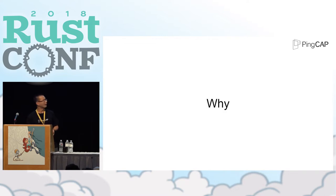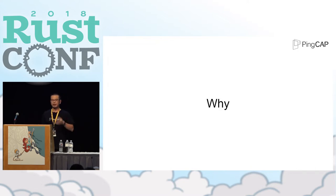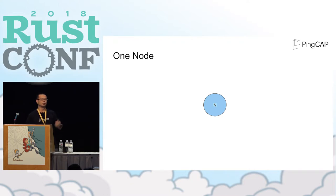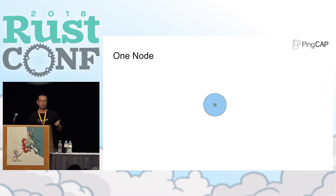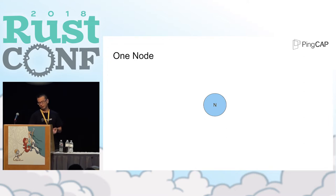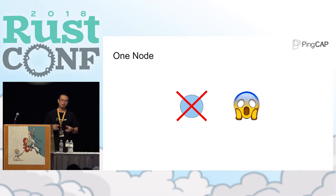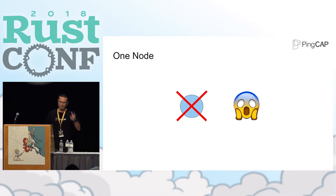Let's begin. Why do we use Raft? Assume that everybody here wants to build a database or storage server. The simplest thing is that you use one node — MySQL or PostgreSQL. The client writes data to this node, and the client reads data from this node. It works well. But the node is only one node, and it has a single point of failure. If the node crashes, the service is unavailable. And furthermore, if the node can't be recovered, you lose all your data.